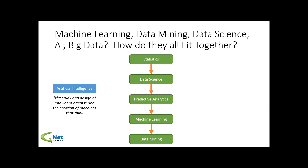Another buzzword you'll hear is artificial intelligence. It was basically defined as the study and design of intelligent agents and the creation of machines that think — I think that's a little bit of a stretch. What we're basically doing is storing patterns and then using them to make predictions. And then also big data — using machine learning with big data can provide tremendous value, but machine learning is not part of big data. Big data is massive volumes of structured and unstructured data and a different type of technology to organize that data, but it's not machine learning.